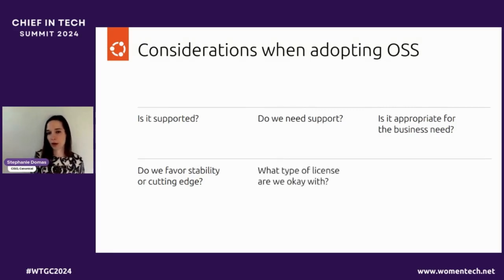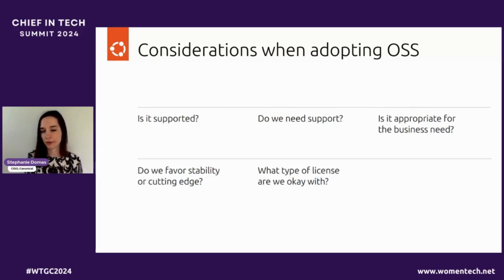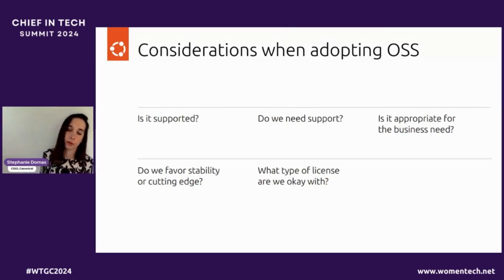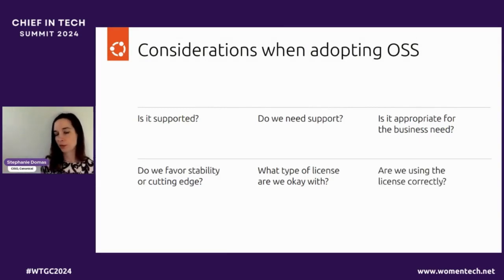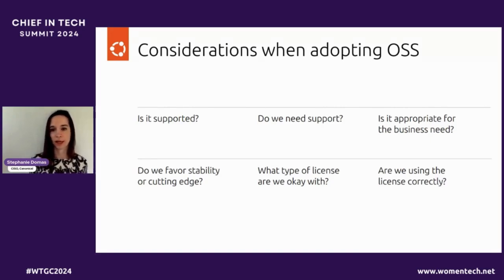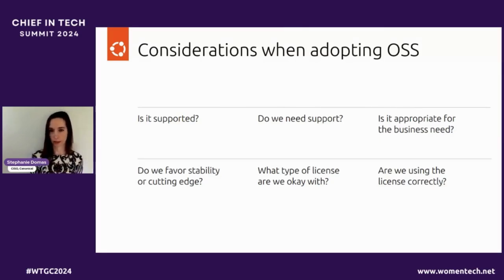What type of license are you okay with? Open source comes with a number of various licenses, and depending on the license type, it can dictate how derived work is done. If I want to take a piece of open source software and leverage it inside of my proprietary solution that I do not intend to open source, there are certain license types that do allow this. But you need to be intentional in making sure you're choosing the correct license types and using them correctly so that the license holds. Are you using that license correctly? People in the open source community sometimes use it incorrectly and violate the license type, and what you don't want is your software that you intended to be proprietary to become obligated to be open sourced because you used an open source library incorrectly.